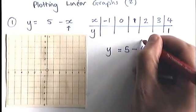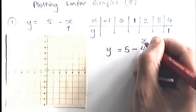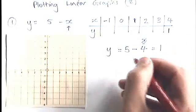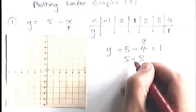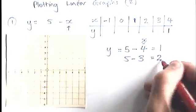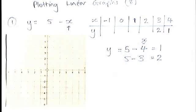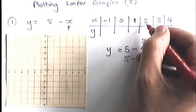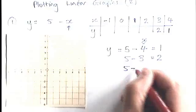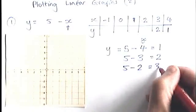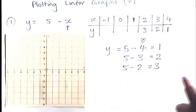If I use an x value, remember x is going to be this number here. If I use the x value of 3, which is the next one to do, I do 5 take away 3, which is 2. If I use the next number, the next x value, which is 2, 5 take away 2 is 3. And you can see what the pattern is doing here.